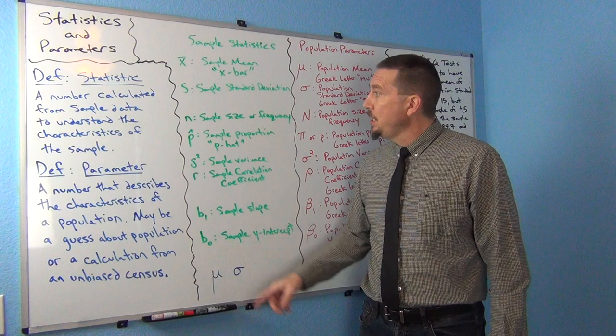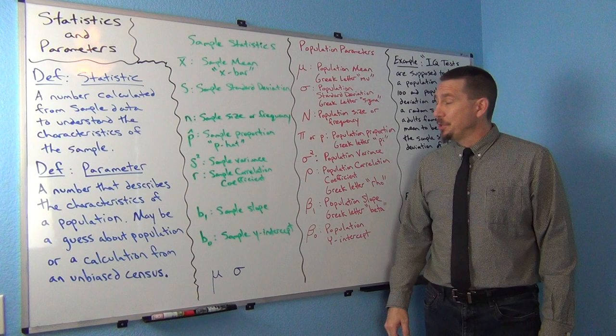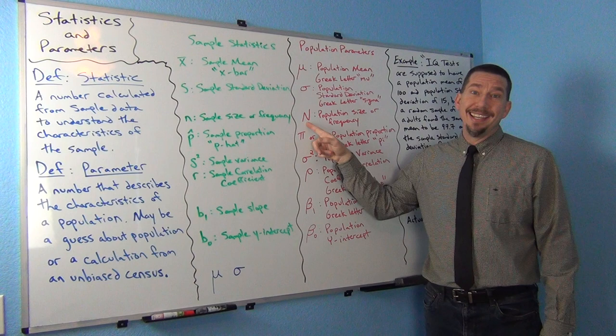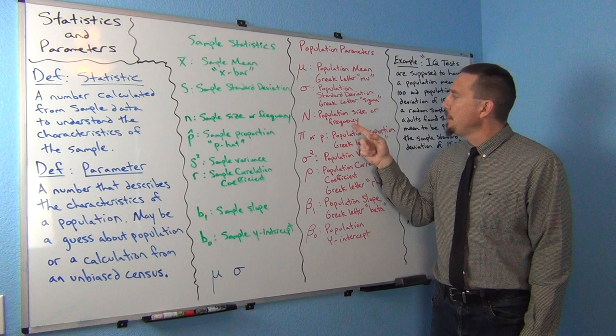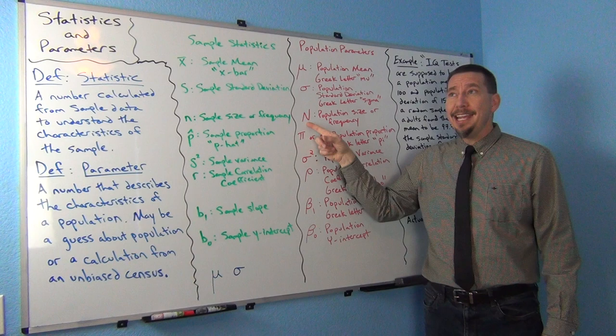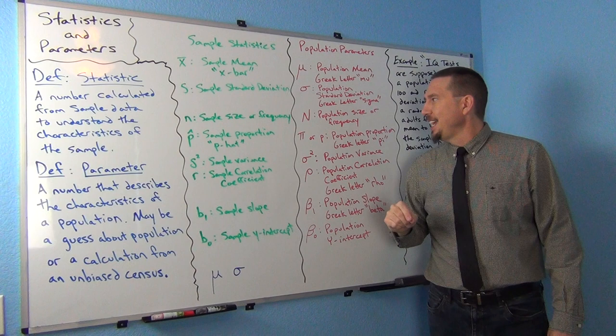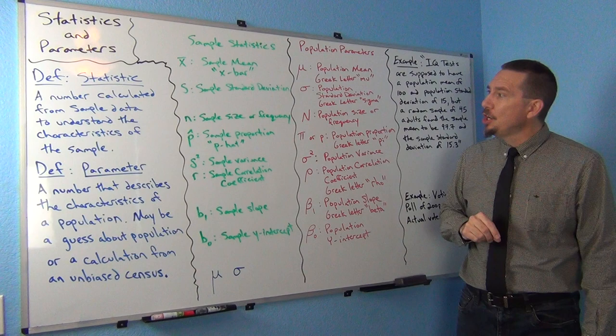If you're trying to find how many people are in New York altogether, that's the population size, denoted as capital N — usually the population size or population frequency. Note that StatCato uses capital N for sample size, which can be confusing, so just be aware that capital N in StatCato denotes sample size, not population size.